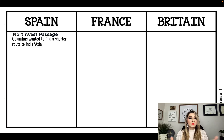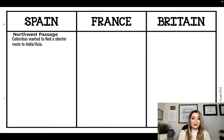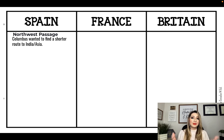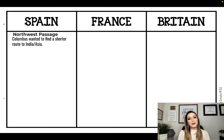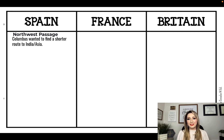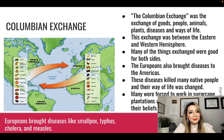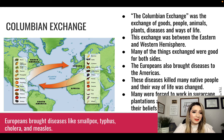This is where you're going to write your notes. Go ahead and press pause every time you see this graphic organizer and write down your notes. It says Columbus wanted to find a shorter route to India/Asia. Go ahead and press pause so you can finish. The Columbian Exchange was the exchange of goods, people, animals, plants, and diseases and ways of life.